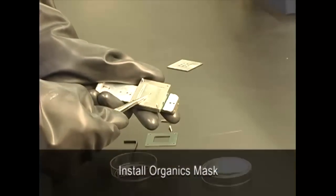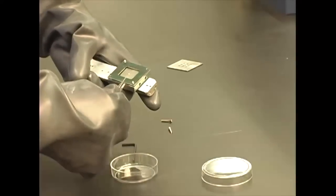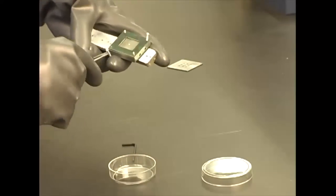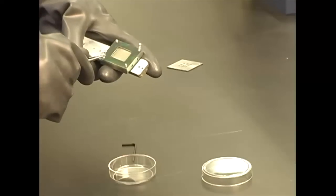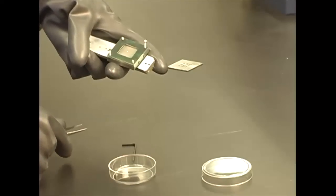We load the ITO into the ITO holder and place the organics mask over the ITO. The mask is held in place with set screws. The square aluminum mask holds the substrate and creates a sharply defined square where the organics layer can be deposited.